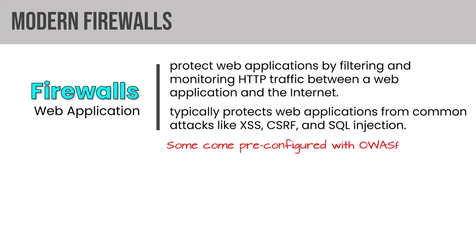Moving on to DNS, domain name system — this is a hierarchical naming system that resolves a host name to an IP address. DNS allows us to match a host name or a fully qualified domain name to an IP address. A fully qualified domain name is the host name plus the domain, such as server1.contoso.com, or www.microsoft.com — where www.microsoft.com is the host name and microsoft.com is the domain name. Together, those create an FQDN.